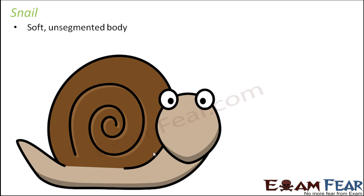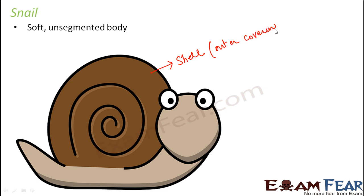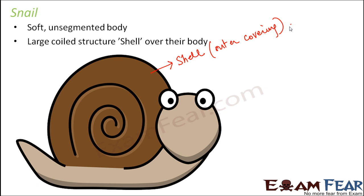Something special about the snail is this shell which they carry over them. You will see this big structure over their back, made up of calcium carbonate. It is like a skeleton on the outer side of the body — an outer covering that provides protection. The shell keeps growing as the snail grows, increasing in size until the snail reaches adulthood, after which it doesn't grow any further. It is a coiled structure over their body.